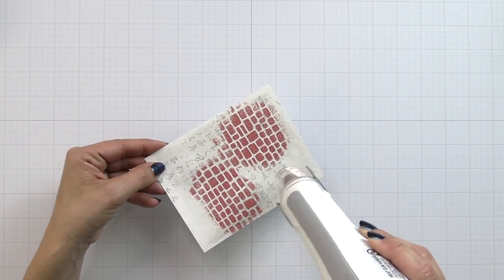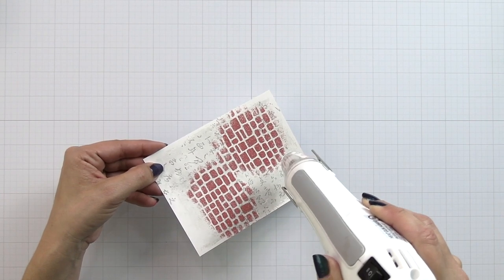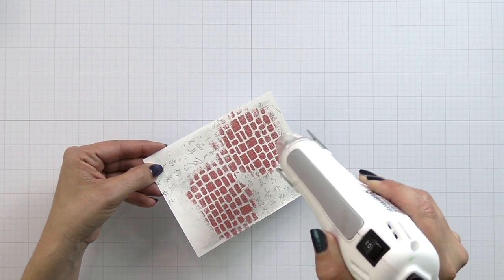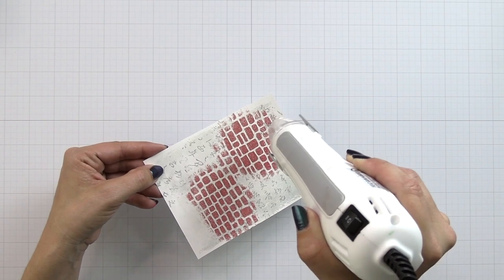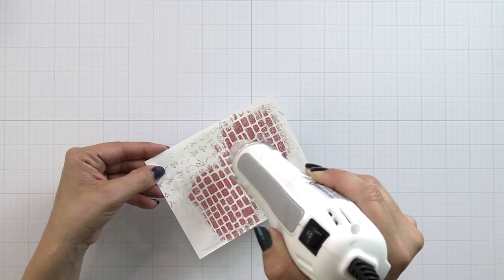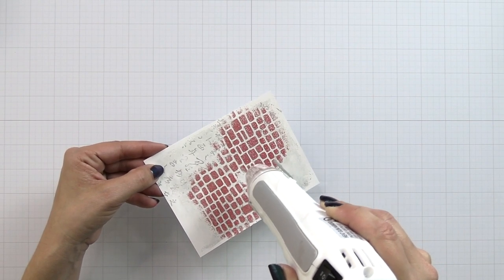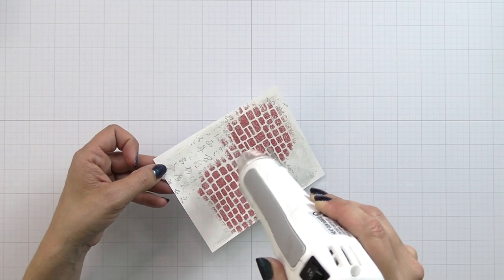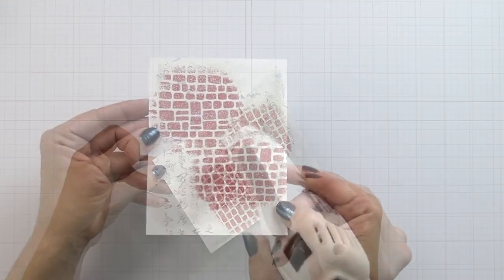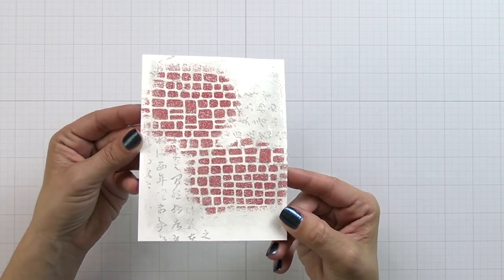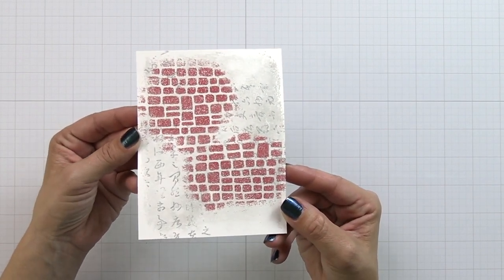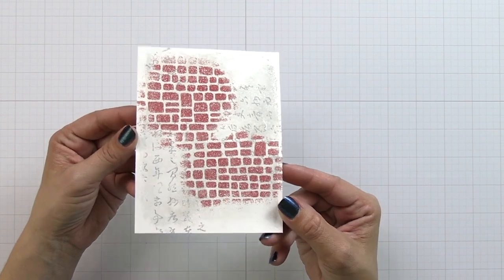Now here's the magic with heat embossing. When you heat this and how you know it's done is it's going to be shiny and glossy, but those white speckles are really going to come to the forefront of that brick embossing powder. That's what gives it almost this sparkly look. Once this is all completely melted here is a look at that background, which I'm totally loving.